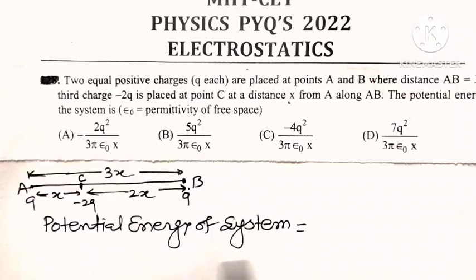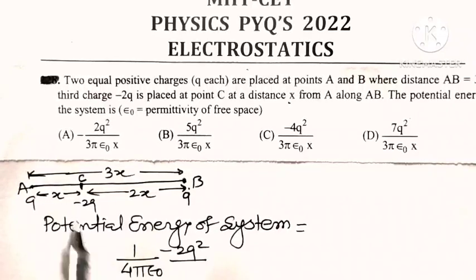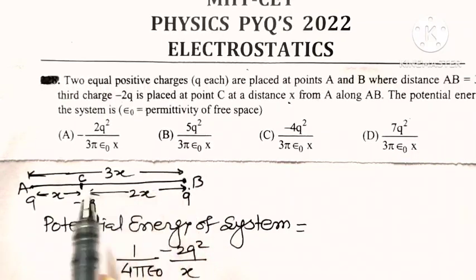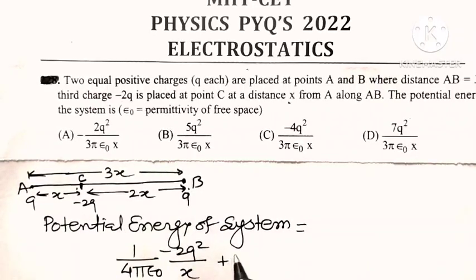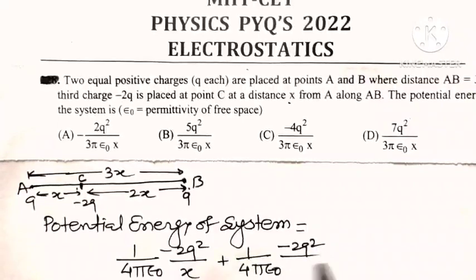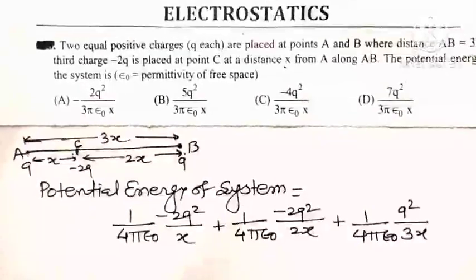The potential energy of the system is 1 upon 4 pi epsilon 0 times: minus 2Q into Q, which is minus 2Q squared divided by x — the distance between minus 2Q and Q. Then minus 2Q squared divided by 2x for the second Q and minus 2Q pair, plus Q squared divided by 3x for the Q and Q pair, since their separation is 3x.